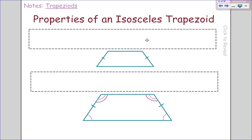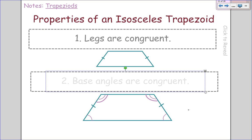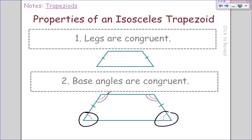Properties of an isosceles trapezoid. First, legs are congruent. Second, the base angles—the angles that go along each part of the base—are congruent to each other. Notice this angle is on the same base as that angle, so they're congruent. And this angle is on the same base as this angle, so these angles are congruent. Notice these two angles will still be supplementary because it's still a trapezoid.